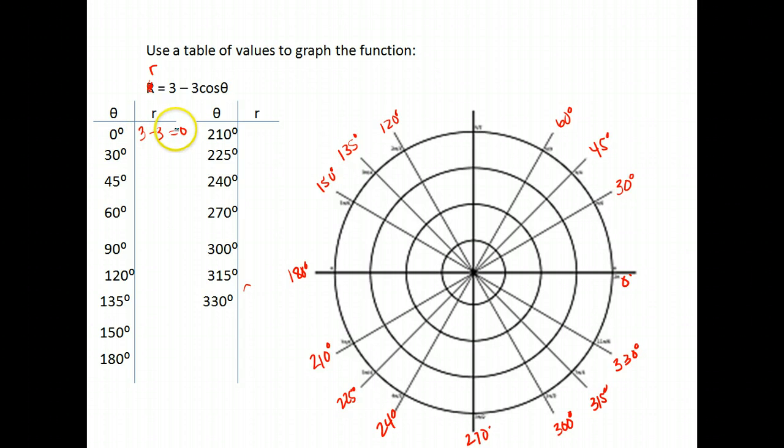So I get the point 0,0. If I put in 30 degrees, the cosine of 30 degrees is 0.87 times negative 3 is negative 2.6 about. So I have 3 minus 2.6 is 0.4. 45 degrees, the cosine of 45 is 0.7 times 3 is 2.1 so I have 3 minus 2.1 gives me about 0.9.